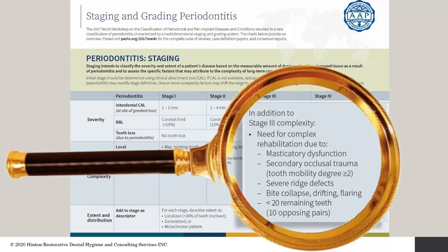What I found most interesting is that we really don't talk about, look at, or consider occlusion until patients reach Stage 4. At that point we're looking at secondary occlusal trauma — things like tooth mobility from existing bone loss — but it doesn't address primary occlusal trauma. Once we reach those later stages, the rehabilitation becomes that much more complex, expensive, and unpredictable. What kind of chance do these patients have with very complex rehabilitations?